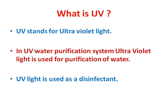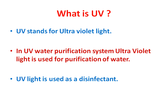First of all, UV stands for ultraviolet light. In this purification system we are using ultraviolet light for the purification of water. UV light acts as a disinfectant — a disinfectant is any material, gas, or chemical which kills microorganisms present in water. In daily life we generally use liquid chlorine and chlorine gas as a disinfectant.